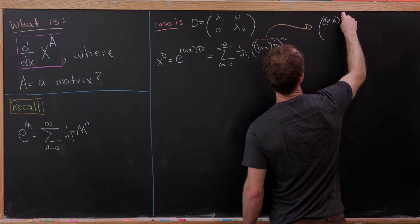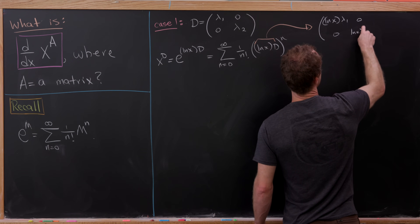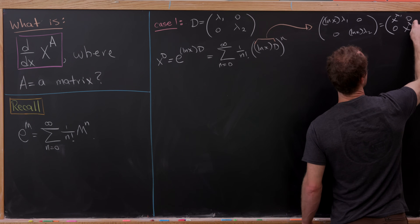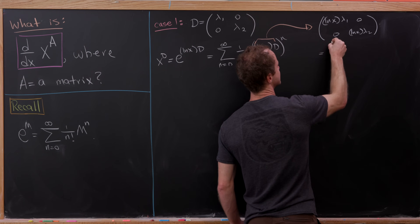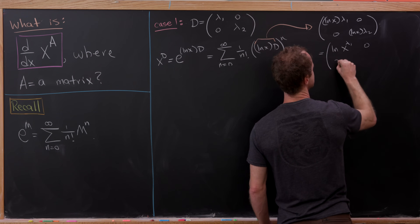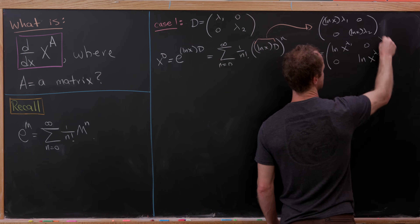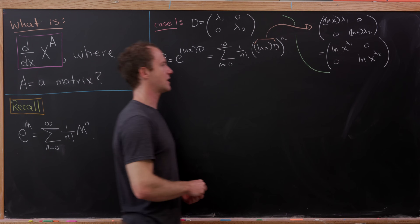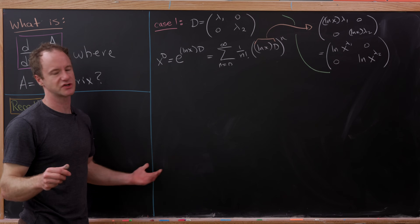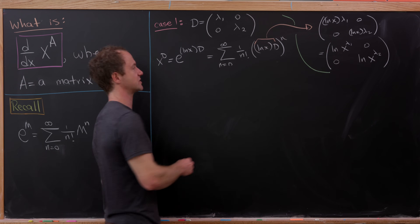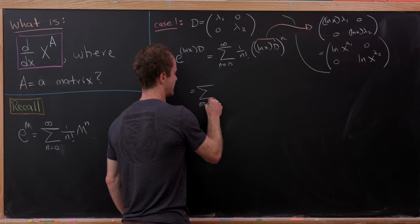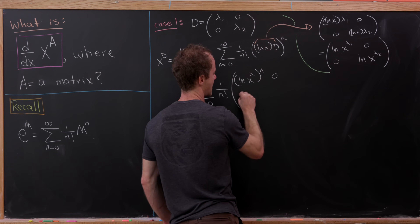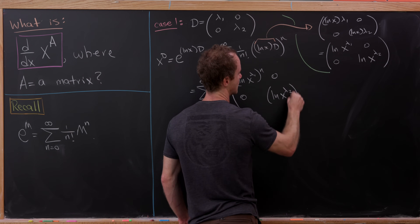That will be the sum as n goes from 0 to infinity of 1 over n factorial, times the natural log of x times D raised to the nth power. The natural log of x times D is just a scalar multiple of D, so it looks like the matrix with ln(x)·λ₁ and ln(x)·λ₂ on the diagonal. Using logarithm rules, that's the diagonal matrix with ln(x^λ₁) and ln(x^λ₂) on the diagonal.